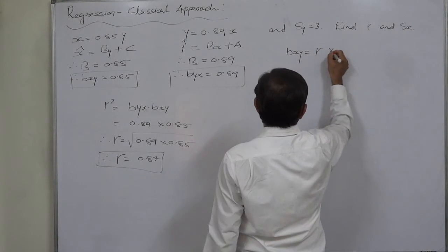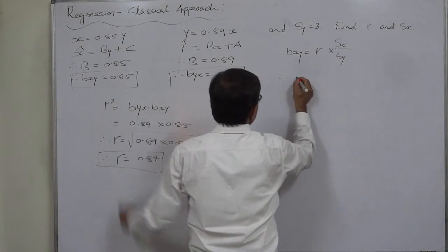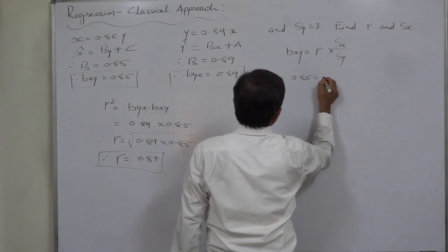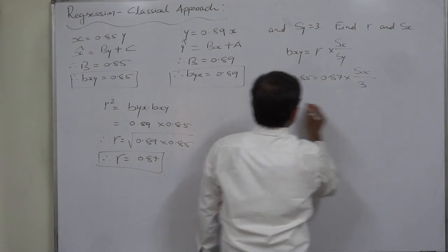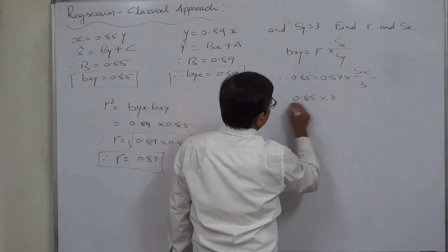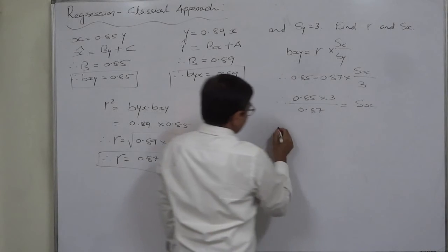bxy equals coefficient of correlation into sx upon sy. Let's substitute the available values: 0.85 equals 0.87 into sx upon 3. Therefore 0.85 into 3 upon 0.87 equals standard deviation of x.